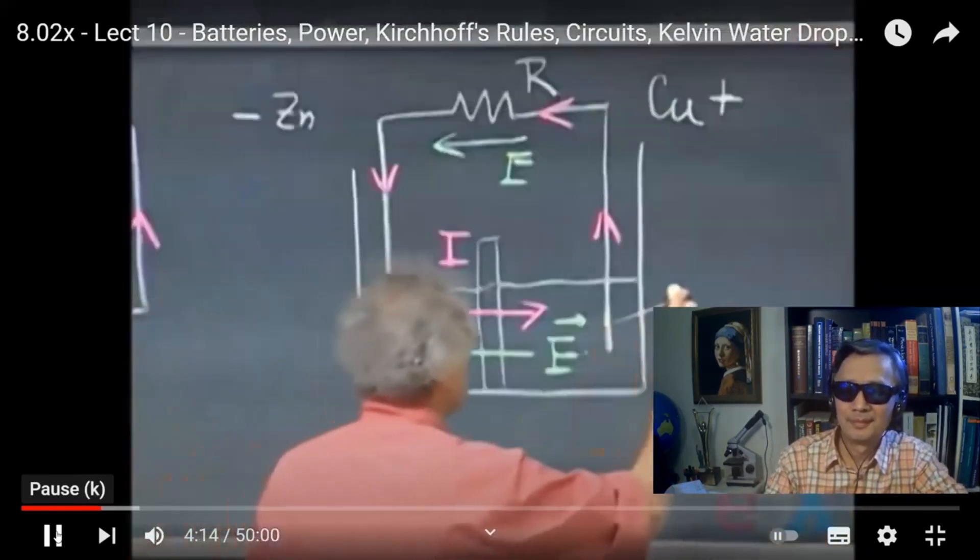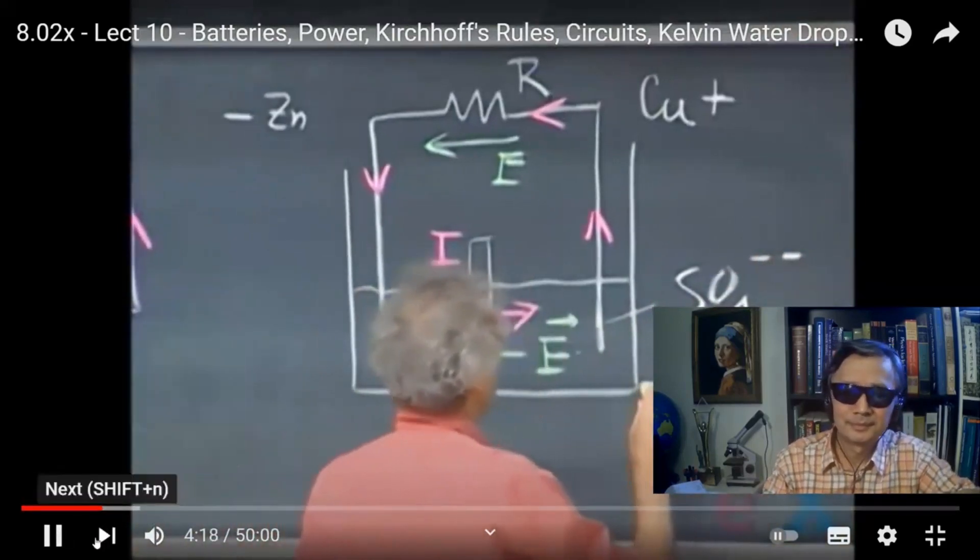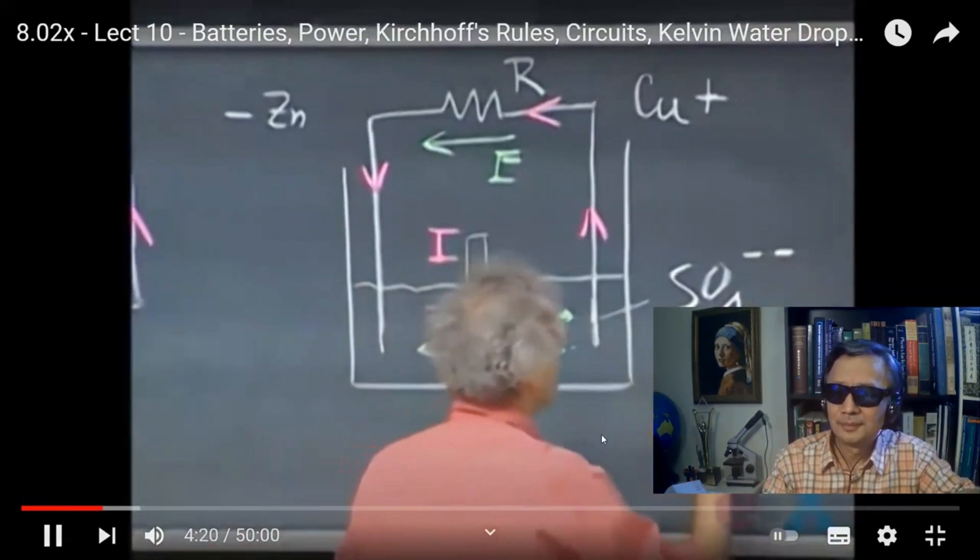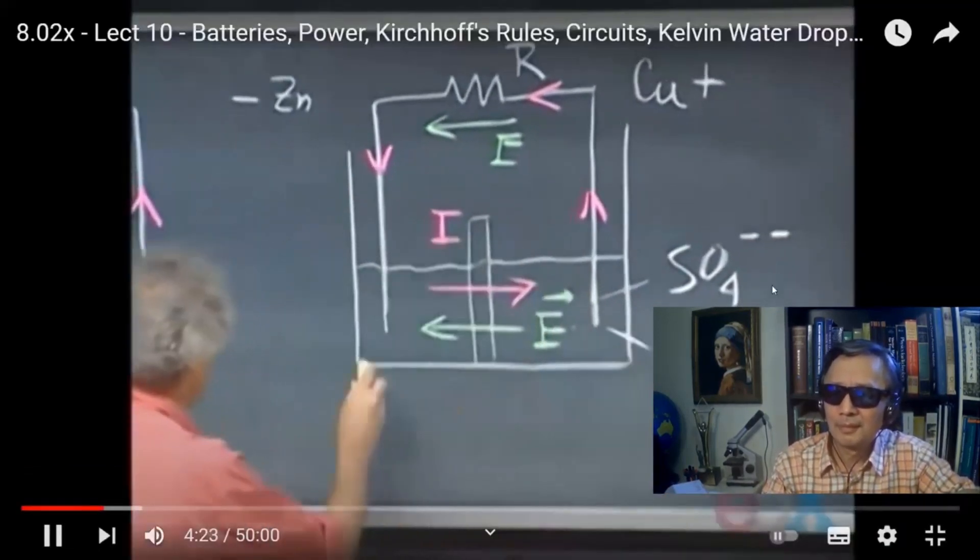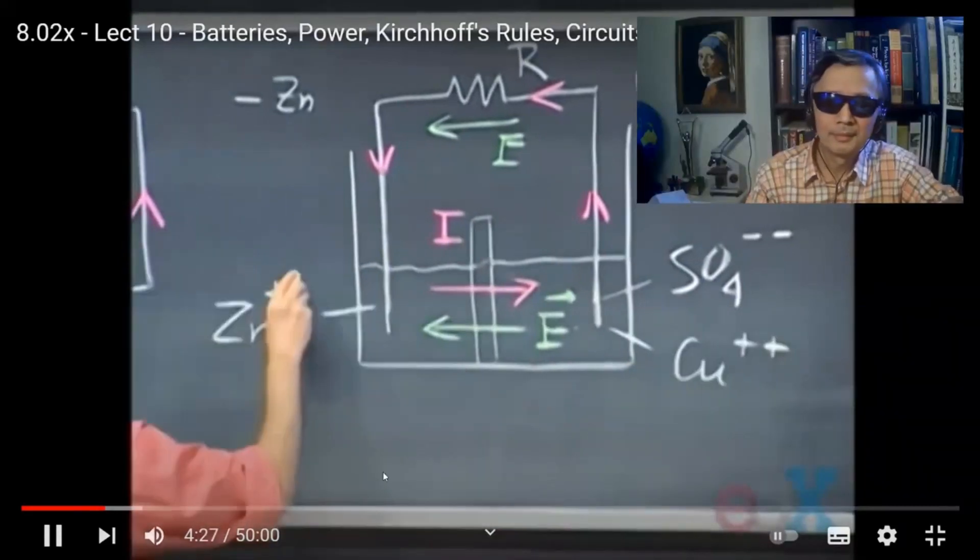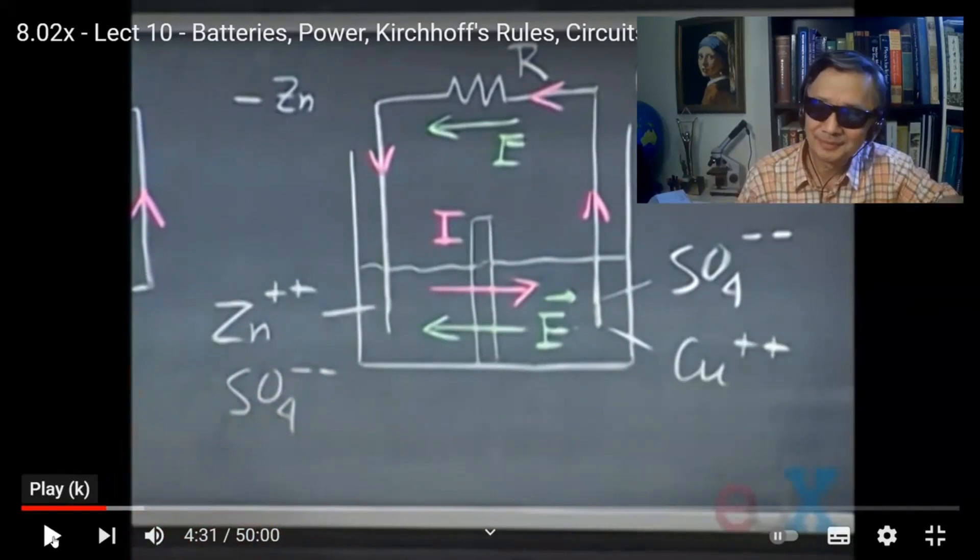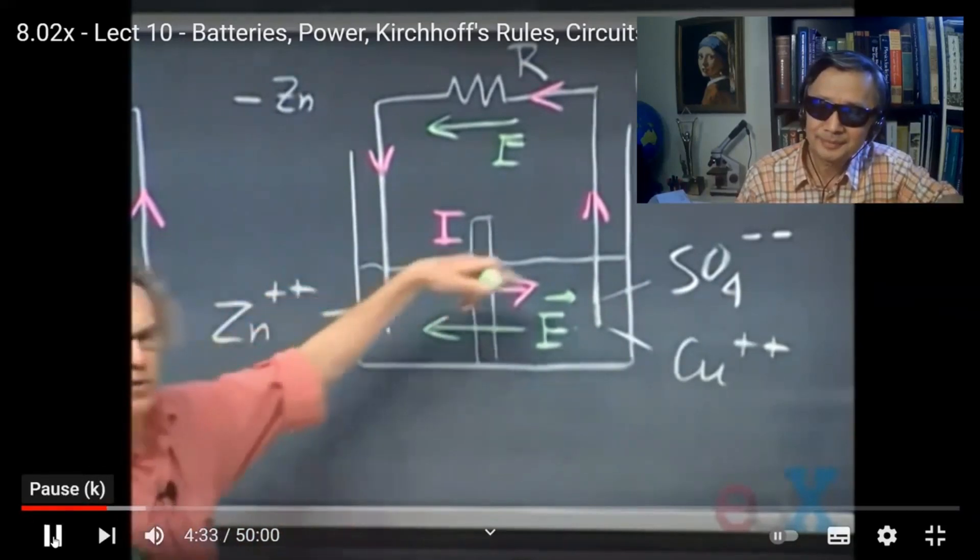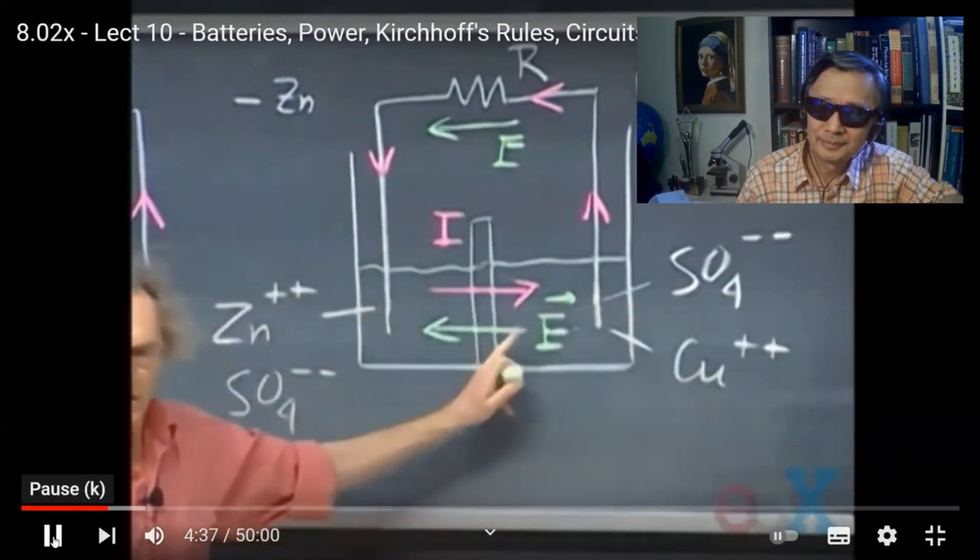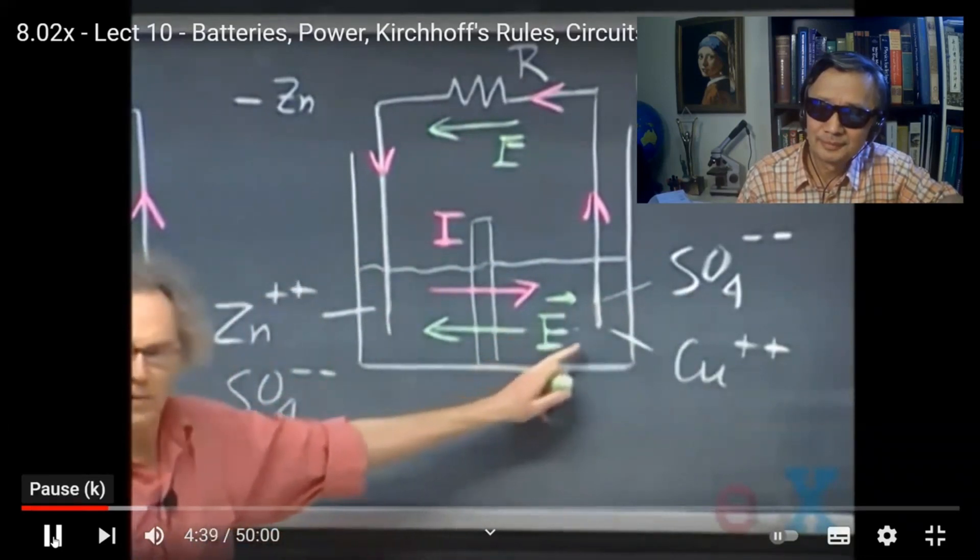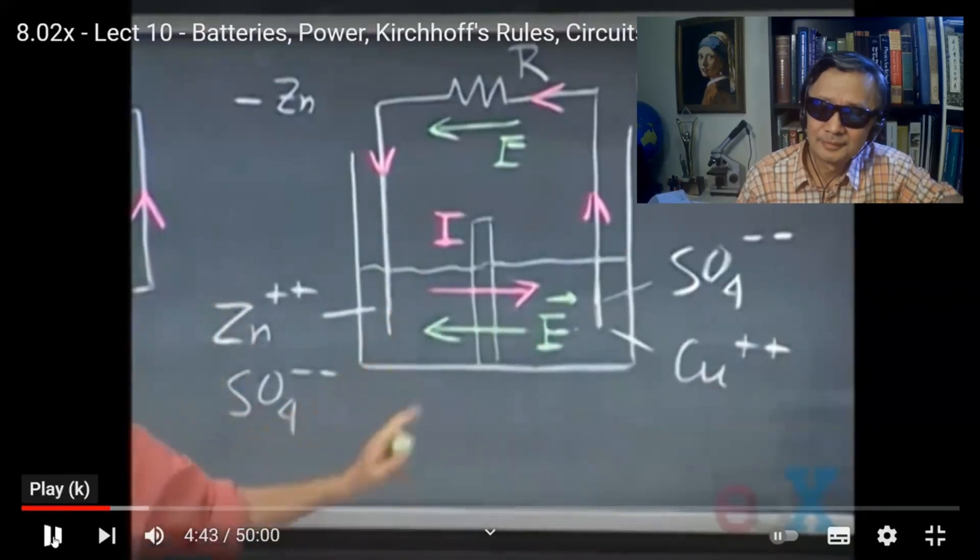You will have here SO4 minus ions, and you have copper plus ions in this solution, and here you have zinc plus, and you have SO4 minus. And as current starts to run, SO4 minus ions, which are now the current carrier inside this battery, is going from the right, they're going from the right...